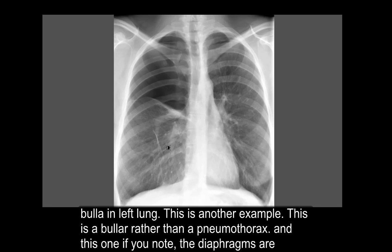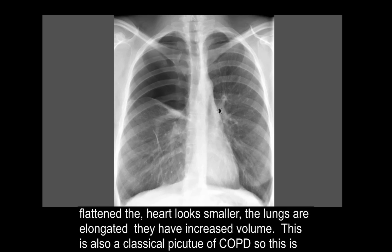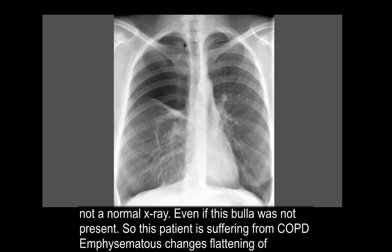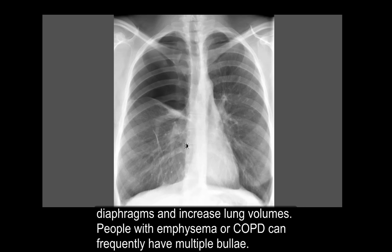This is a bulla rather than a pneumothorax. If you note, the diaphragms are flattened, the heart looks smaller, the lungs are elongated, and they have increased volume — this is also a classical picture of COPD. So this is not a normal X-ray even if this bulla was not present. This patient is suffering from COPD with emphysema changes, including flattening of the diaphragm and increased lung volume. People with emphysema or COPD can frequently have multiple bullae.